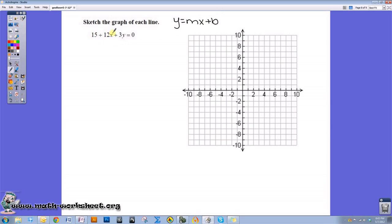So I'm going to first subtract 15 from both sides, so I'll have 12x plus 3y equals negative 15. Then I need to subtract 12x from both sides, so I'll have 3y is equal to negative 12x minus 15.